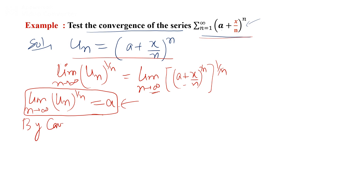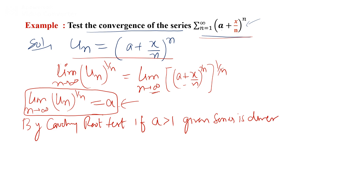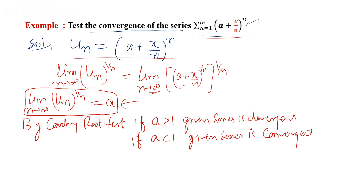By the Cauchy root test: if a > 1, the given series is divergent. If a < 1, the given series is convergent. If a = 1 exactly, the test fails to explain the convergence of the series.